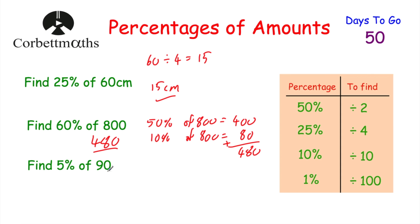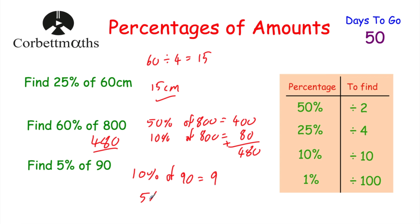For the last one, to find 5% of 90: you could find 1% by dividing by 100, which gives 0.9, and then do 5 lots of that. But an easier way is to get 10% and then half it. 10% of 90: divide by 10, that's 9. Then 5% is half of 9, which is 4.5. So 5% of 90 is 4.5. If you got those answers, well done.